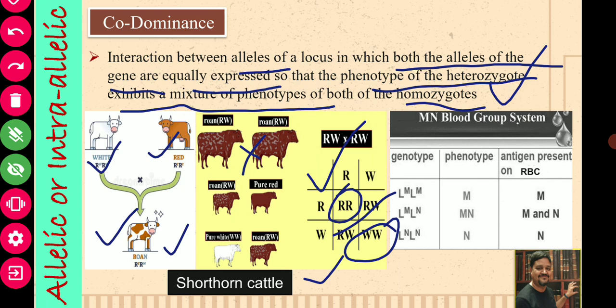Similarly, the second example is the MN blood group system in humans. When genotype is MM, the phenotype is M because it will have M antigen present on the RBC. When the genotype is MN, the phenotype will be MN because it will have antigens for both M and N. When alleles are NN, the phenotype will be N and only N antigen is present. So when M and N are both present, the phenotype is different — MN — and it will have both the M and N antigens. This is an example of co-dominance.